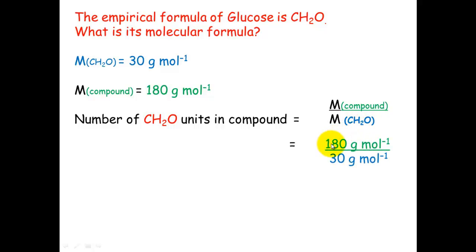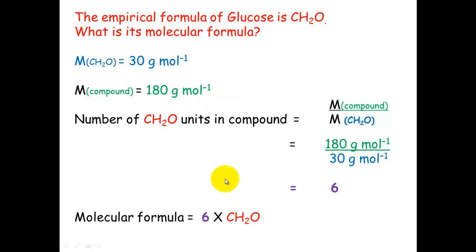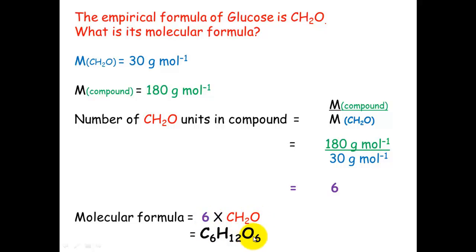The number of CH₂O units in the compound equals the molar mass of the compound divided by the molar mass of the empirical formula — 180 divided by 30, which equals 6. So 6 of these 30-grams-per-mole units fit into the 180-grams-per-mole unit of the entire compound. Multiplying the empirical formula by 6 gives us C×6 = C₆, H2×6 = H₁₂, and O×6 = O₆, so the molecular formula is C₆H₁₂O₆.